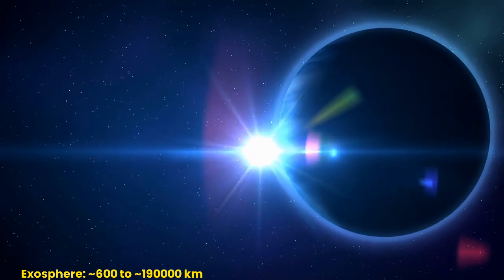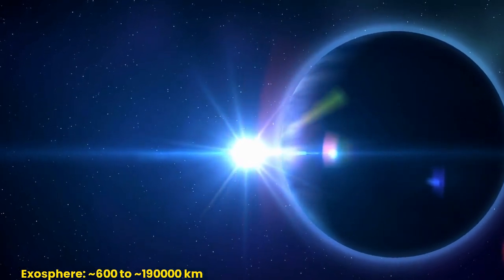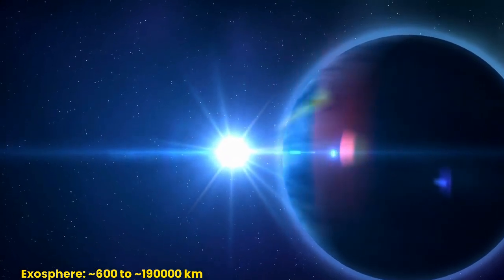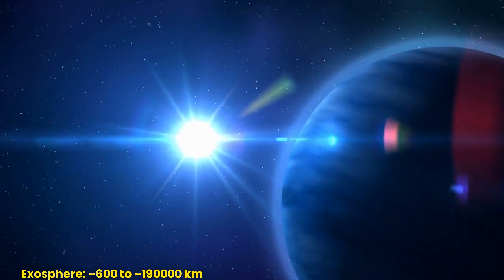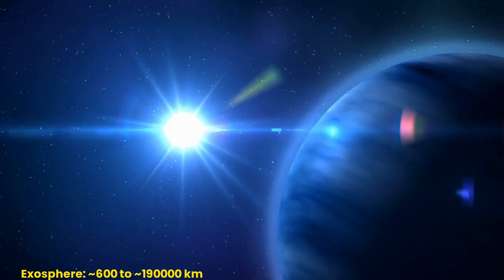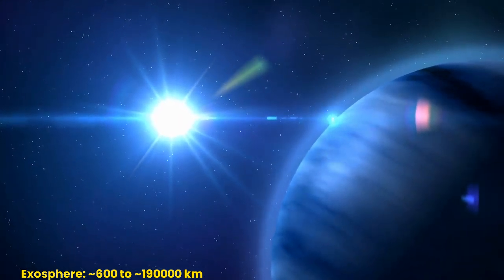Exosphere: the exosphere is the outermost layer of the Earth's atmosphere, and it extends from the top of the thermosphere out into space. There is no clear-cut upper boundary where the exosphere finally fades away into space.